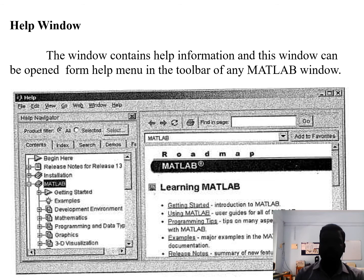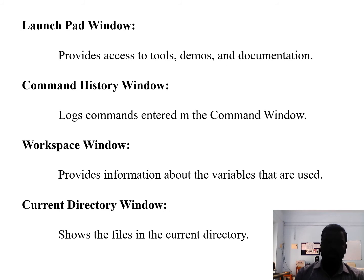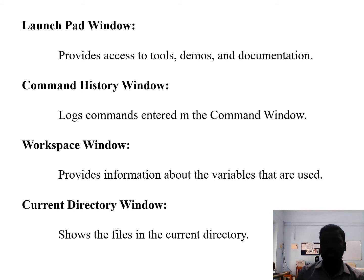The Help Window contains help information and can be opened from the Help menu in the toolbar of any MATLAB window. The Launchpad Window provides access to tools, demos, and documentation. The Command History Window logs commands entered in the Command Window. The Workspace Window provides information about variables in use, and the Current Directory Window shows files in the current directory.